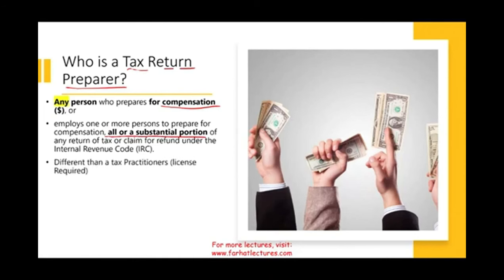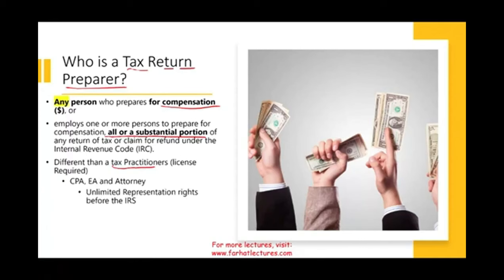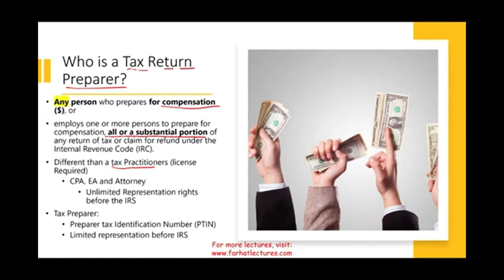Tax return preparers are different from tax practitioners. Tax practitioners require a license — like a CPA, EA, or attorney — and have unlimited representation rights before the IRS. Tax preparers have a PTIN and have limited representation before the IRS. Anyone can become a tax preparer by filing paperwork with the IRS and obtaining a PTIN.